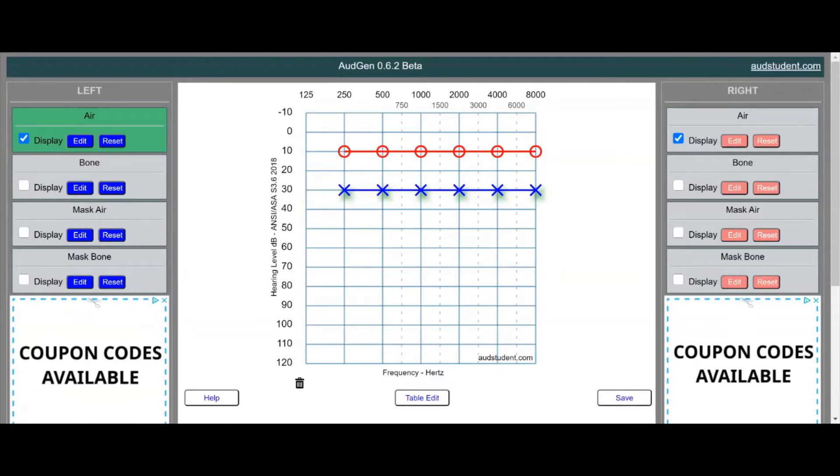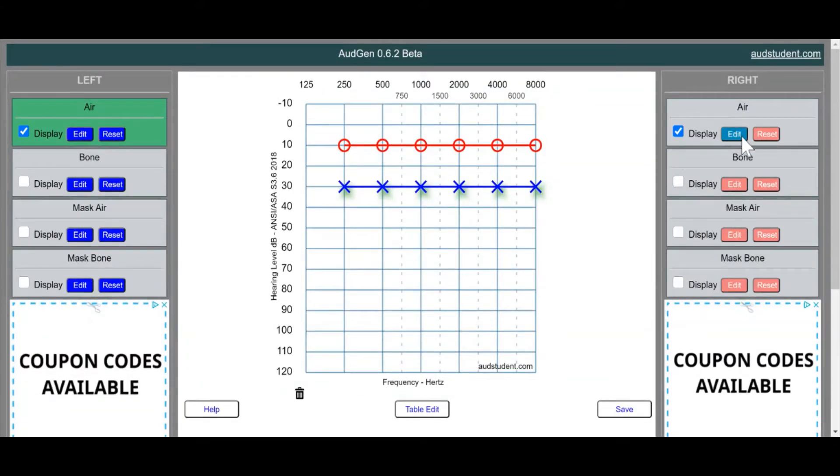All right, so the first thing that we're told through our problem statement is that the hearing loss is unilateral. Uni of course meaning one. And we also know that the hearing loss is within the left ear. So we can tell that the right ear is probably going to be normal, or at least we can assume it is.